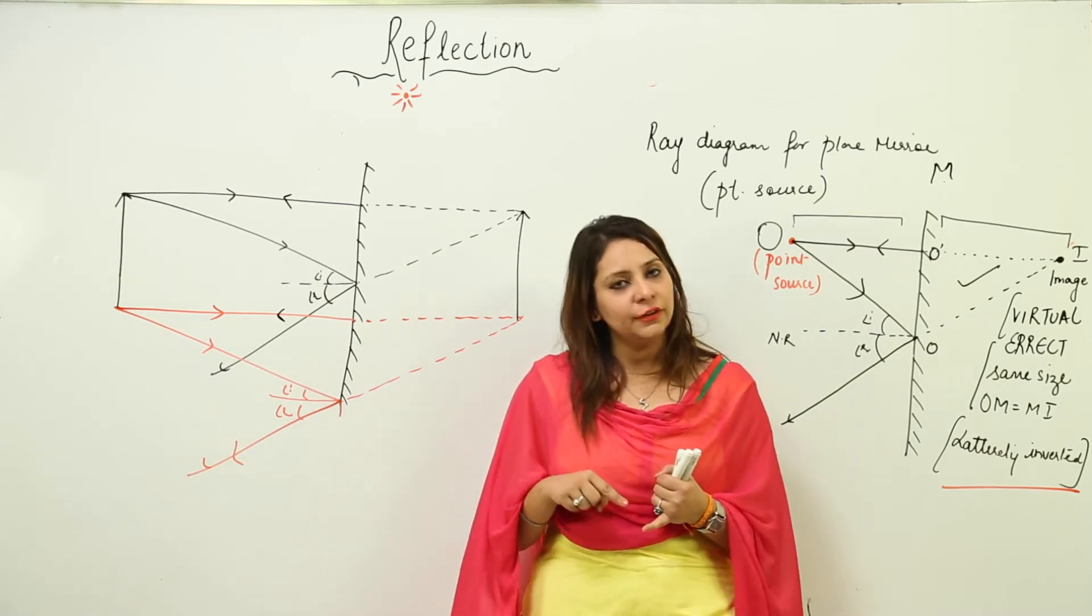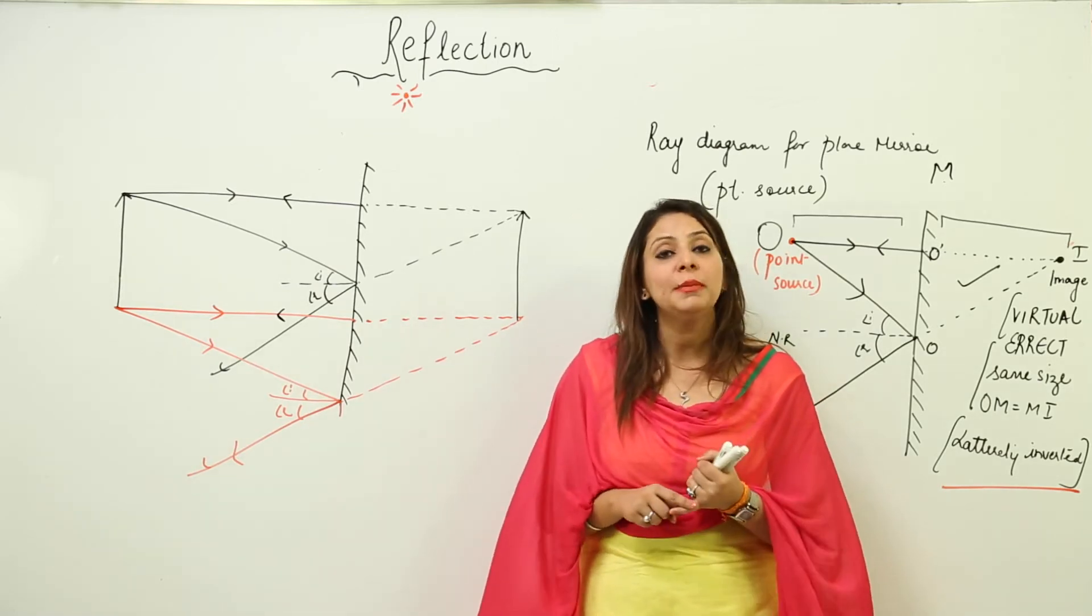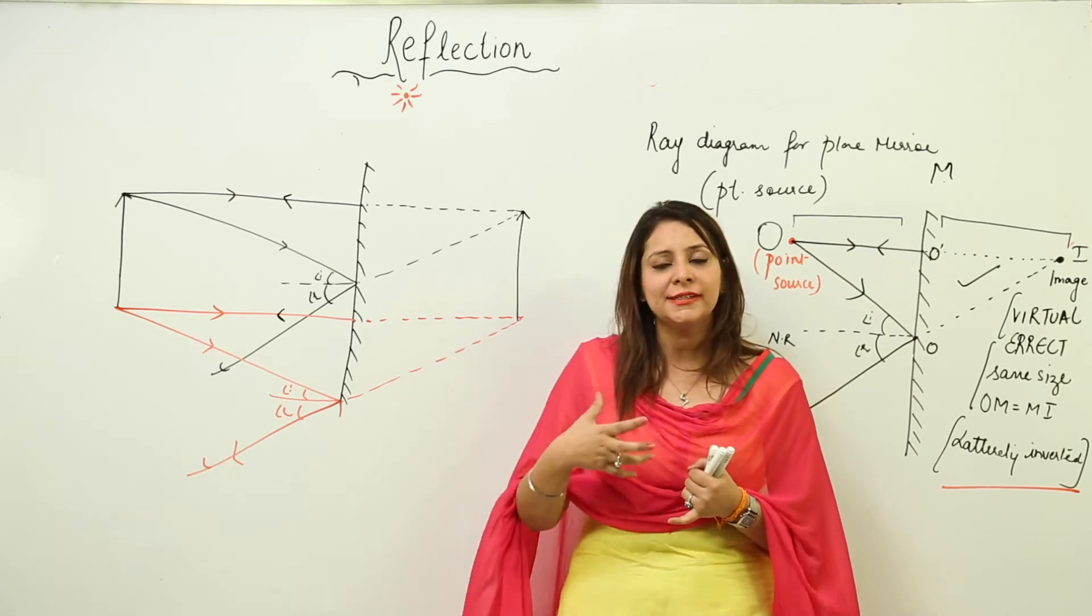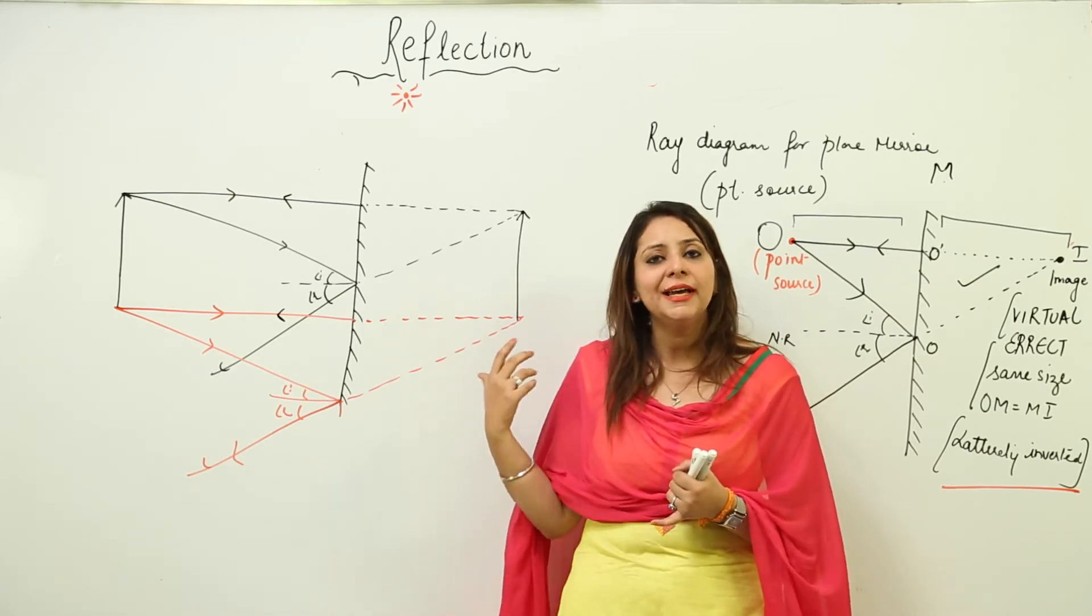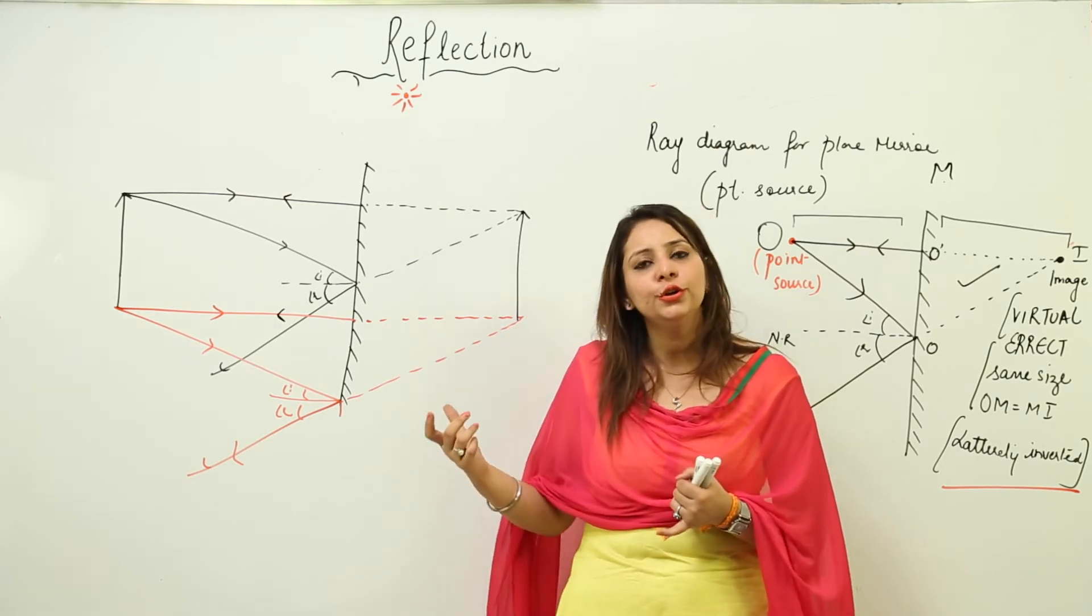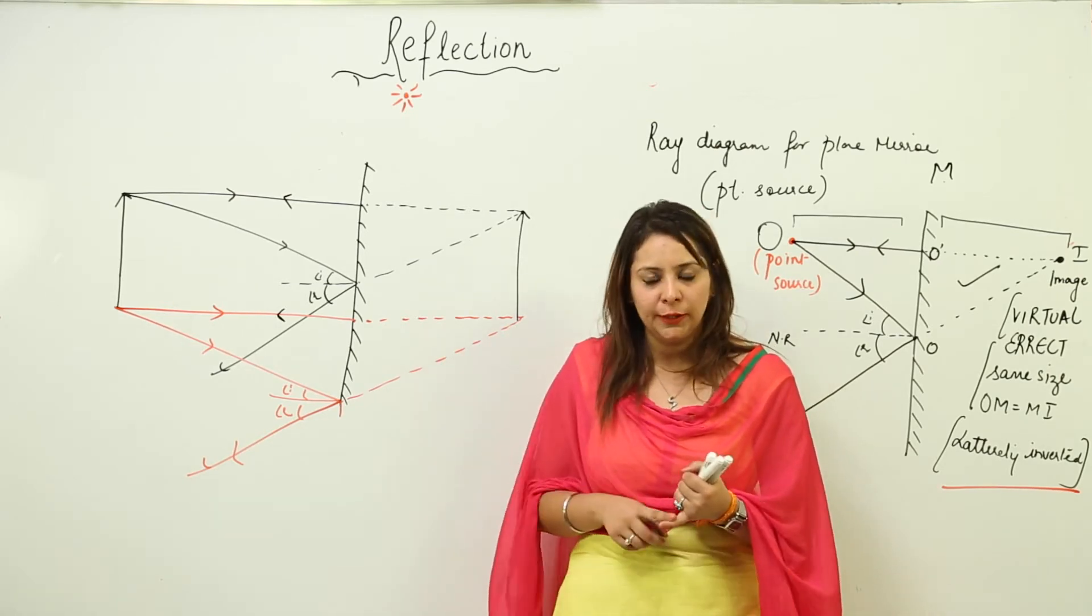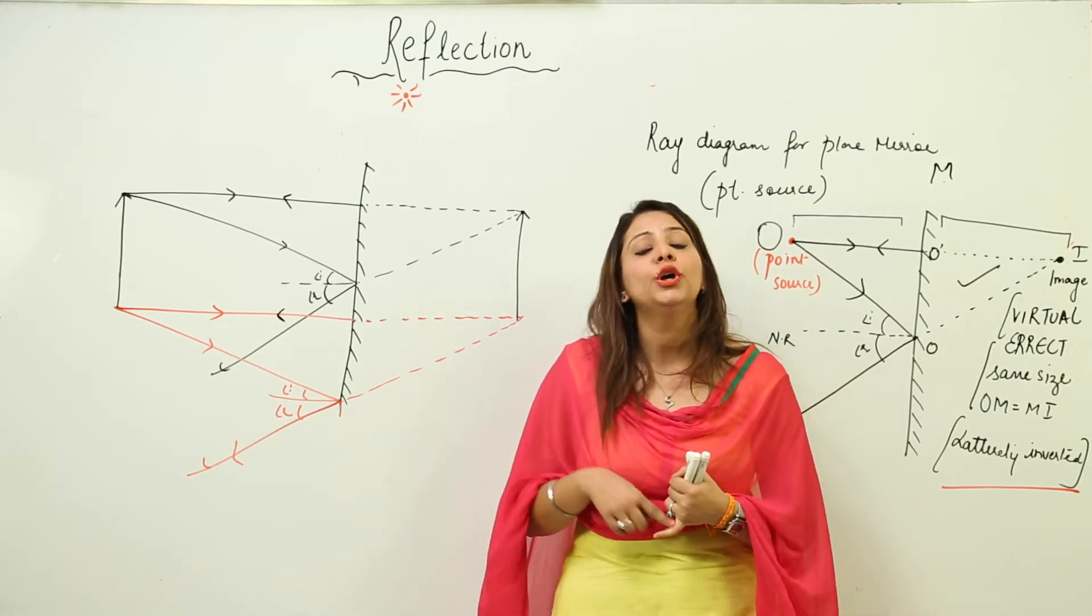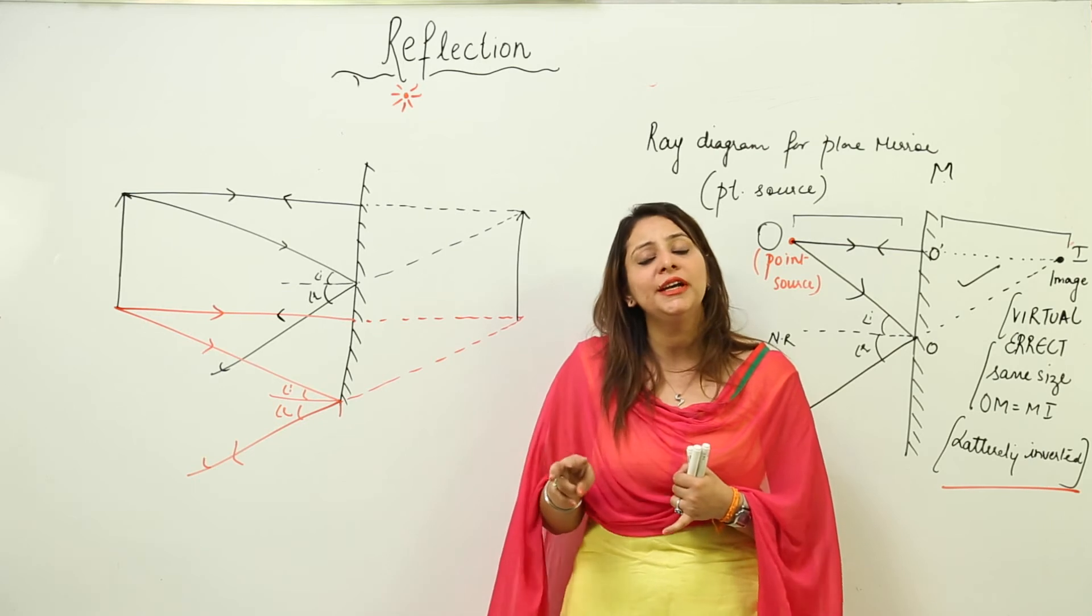Moreover, it is used in barber shops also as a rearview mirror. Like when you want to look at your hairstyle from the backside, what kind of mirror you use? You make use of this plane mirror only. It is used in a periscope, it is used in a kaleidoscope, it is used in a solar cooker also.